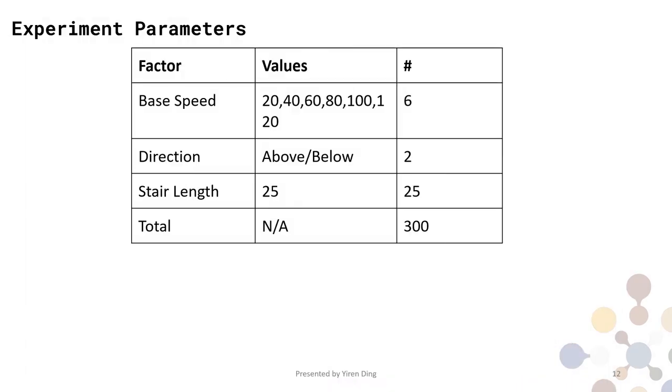Here are the experiment parameters. We have six base values measured from hint.fm, two directions, and for each base value and direction combination, there will be 25 trials. We call it stair length. In addition, each participant is assigned to either mixed encoding condition or single encoding condition, making it a between-subject design.